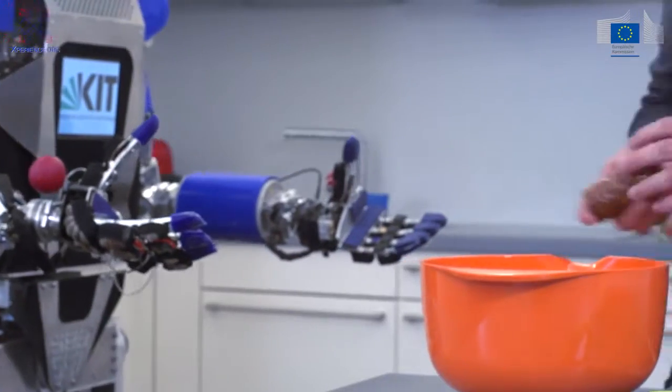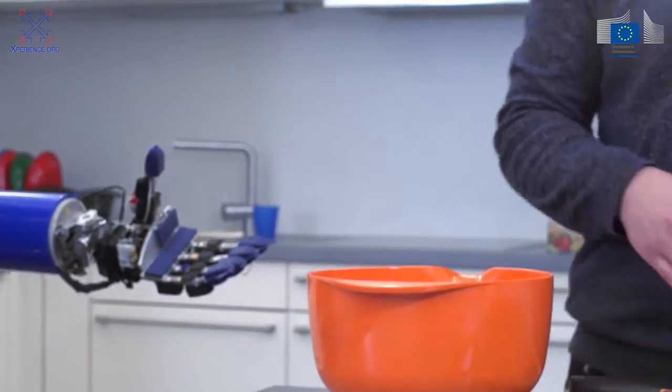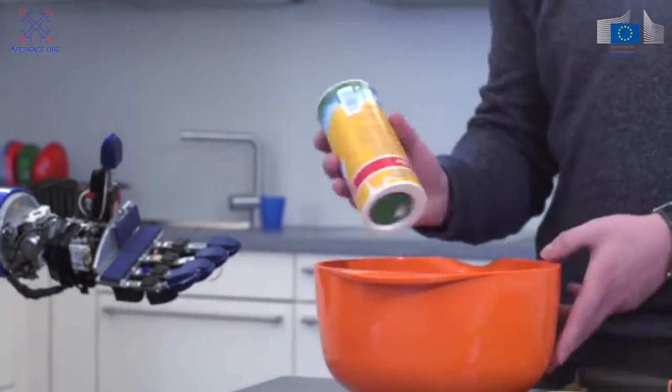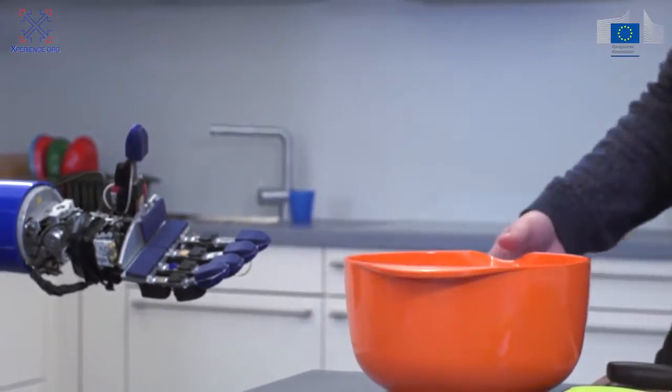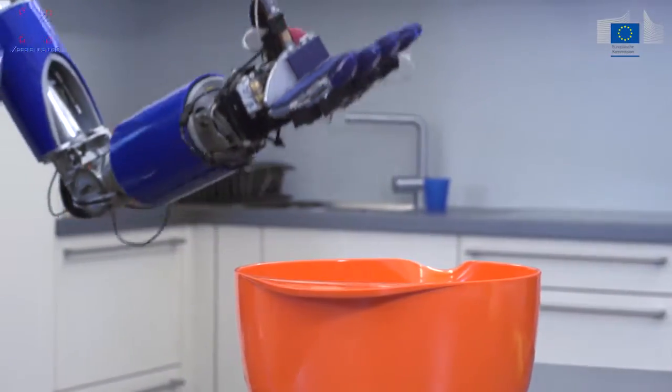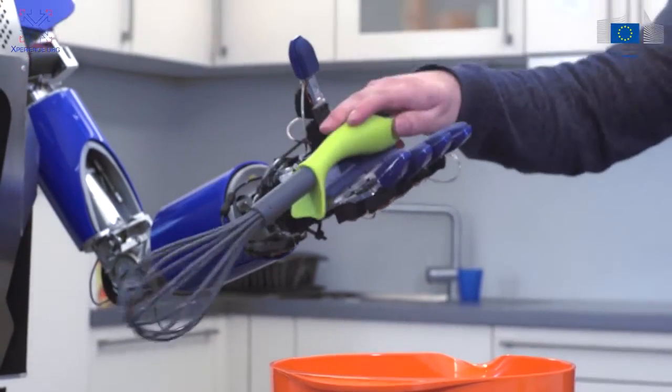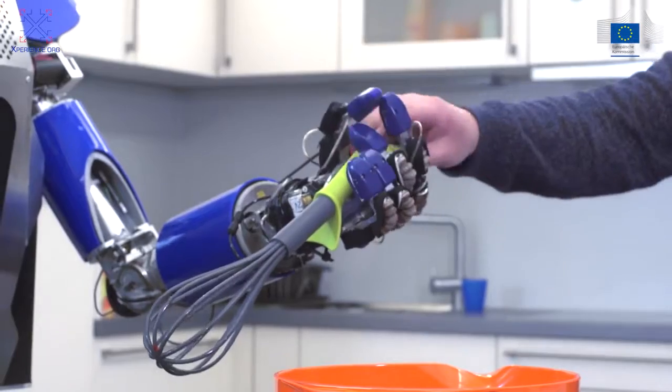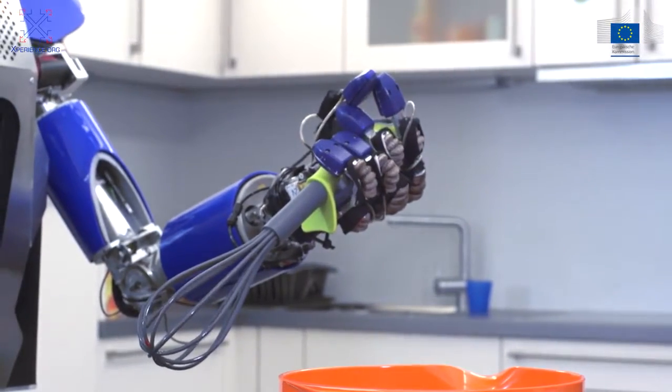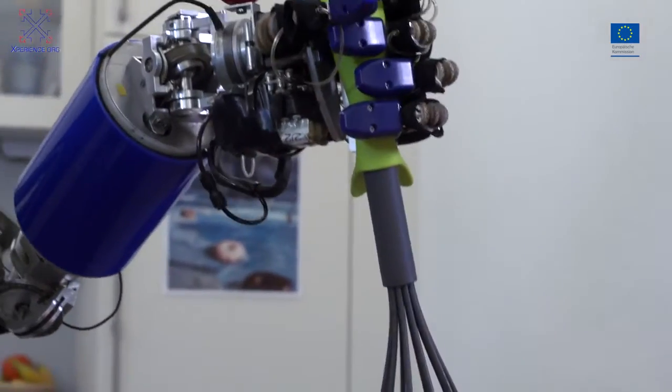If a required object is not reachable or graspable to the robot, then it asks the human for assistance. I cannot reach the whisk. Can you please pass it to me? Here you go. The robot closes its hands once contact and force in the hand is detected.